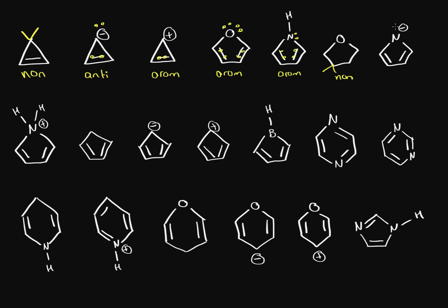On this one we have a negative charge on nitrogen, but that doesn't make much of a difference because nitrogen still has two lone pairs and one of these lone pairs can become a double bond through resonance. So we only pick one of these lone pairs as part of our pi electron structure. We have 1, 2, 3, 4, 5, 6 pi electrons total. The second lone pair resides in the sp2 orbital, so we only pick one, giving us 6 electrons. This is aromatic.